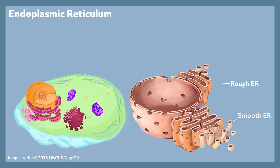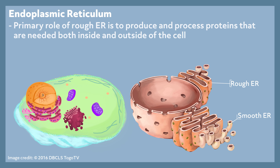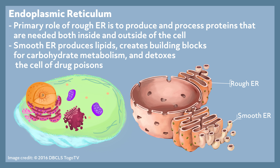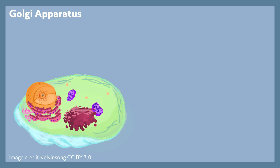The rough ER and smooth ER have different functions. The primary role of the rough ER is to produce and process proteins needed inside or outside the cell, putting them into their three-dimensional shape so they are set up to function properly. The smooth ER works to produce lipids, creates the building blocks for carbohydrate metabolism, and works to detox the cell of drugs and poisons. The endoplasmic reticulum will be more prominent in some cells than others — brain, muscle, and liver cells, for example, will all have a more extensive smooth endoplasmic reticulum.